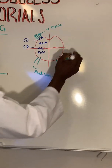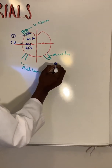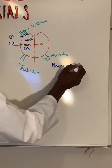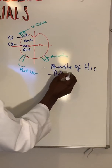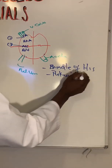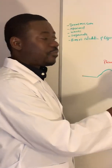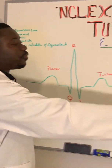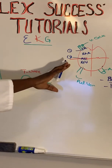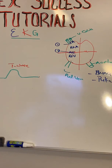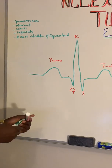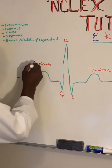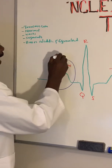We have two more conduction structures found further along the pathway: the bundle of His and the Purkinje fibers. The Purkinje fibers and the bundle of His are also part of the pathway through which these impulses flow through the heart. Now, the P wave of the heart represents what we call the atria of the heart.